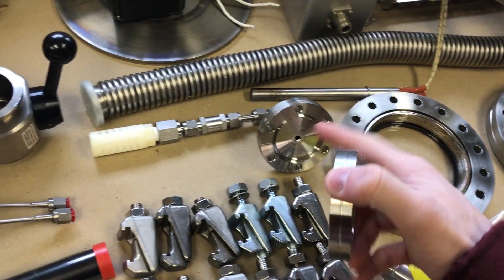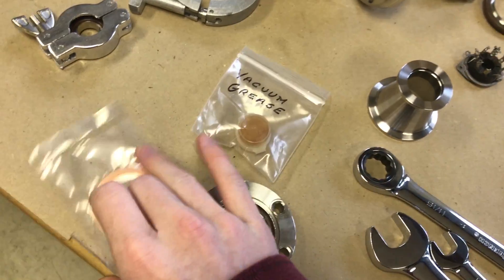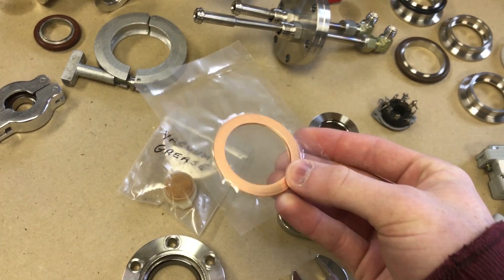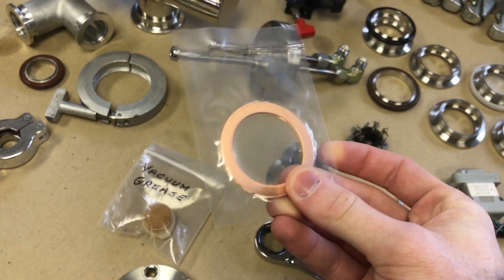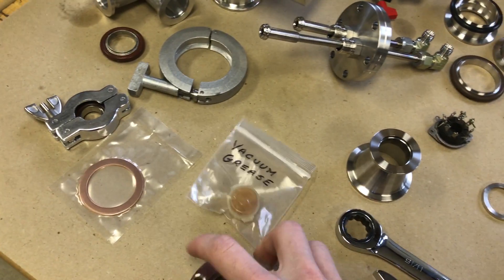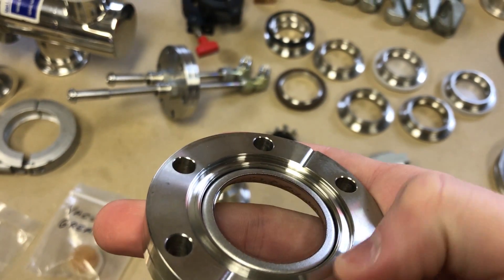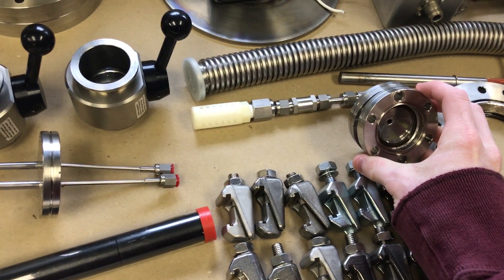So if this were the chamber end, it would bolt on like that. And you would sandwich a copper gasket in between them. It's an oxygen-free copper gasket. And these get pretty pricey as these conflats get larger. And that would get pressed in by this knife edge in there. And it would create a very, very good high vacuum seal.